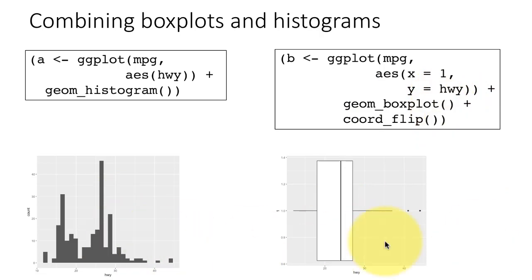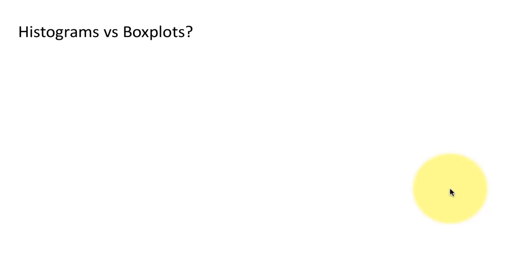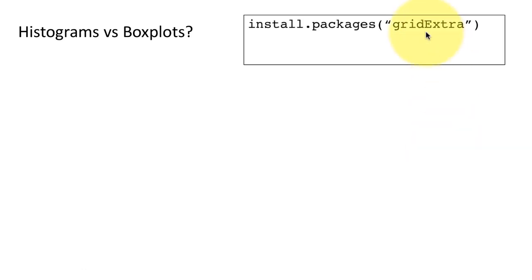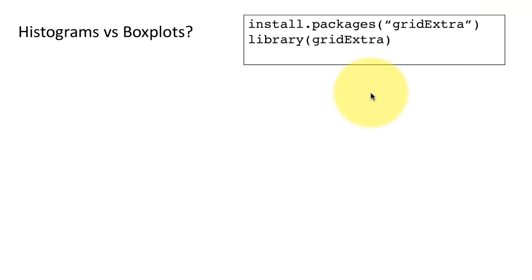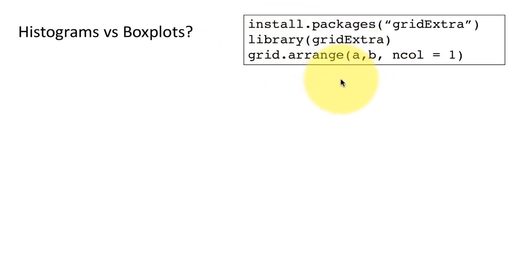Now what we want to do is put both of these together into a single plot. In order to combine them we will be installing a new package called gridExtra — spelled with a lowercase 'g' and uppercase 'E'. ggplot itself doesn't have the capability to take two different plots and combine them, so somebody wrote a package called gridExtra. After installing and loading it, there is a function called grid.arrange inside this package.